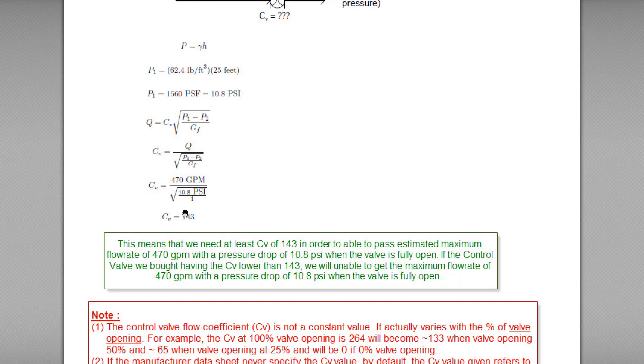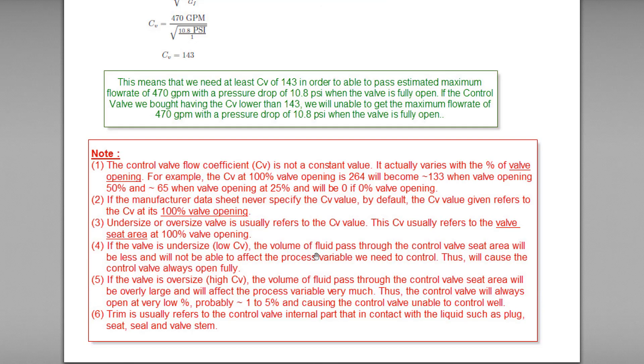This means that we need at least CV of 143 in order to pass estimated maximum flow rate of 470 gallons per minute with a pressure drop of 10.8 PSI. If the control valve that we bought having the CV lower than 143, we will be unable to get the maximum flow rate of 470 gallons per minute. That's all. Thanks.